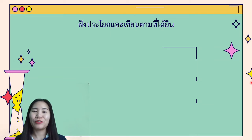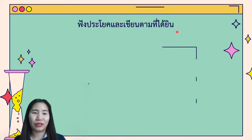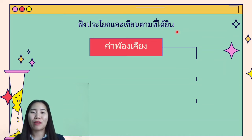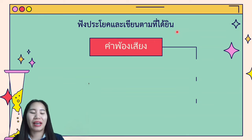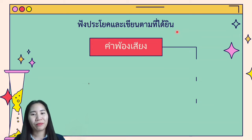Now let's move to some exercises. This exercise is ฟังประโยคและเขียนตามที่ได้ยิน — you have to listen to the sentence and write what you heard. These sentences use the คำพ้องเสียง homophones we have seen earlier. Let's start with the first sentence: ยาตัดหญ้าที่สนาม.